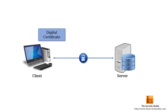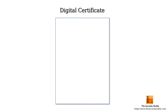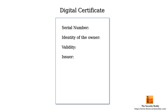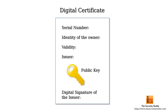When a certificate authority issues a digital certificate to an entity, the digital certificate contains various information such as a serial number, an expiration date, the public key of the entity, the digital signature of the issuing certificate authority, etc.